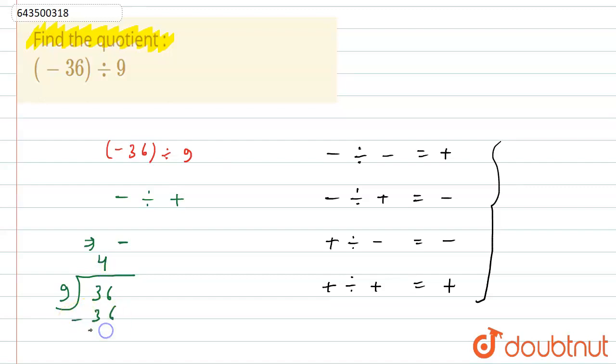36 minus 36, this is 0. So we know that this is our quotient, this is the remainder, and this is the divisor and this is the dividend.